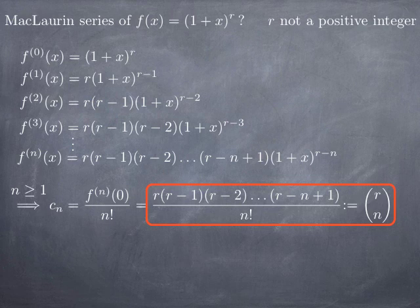Let's look at the first few values. When n = 1, the denominator is 1 factorial, which is 1, and the numerator has just one element: r. So C(r, 1) = r / 1 = r. This is consistent with the combinatorial interpretation: the number of ways to pick one element out of r is r, since you have r choices.